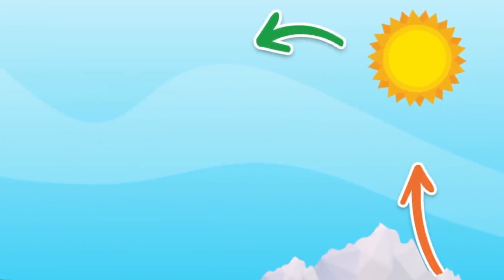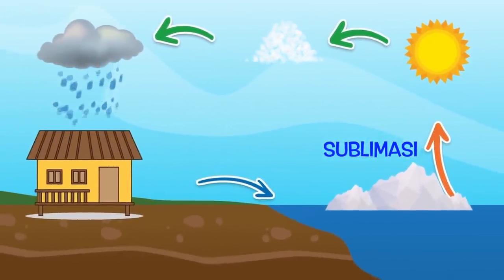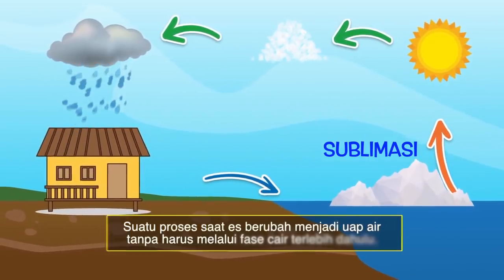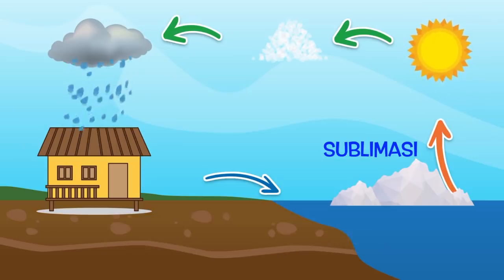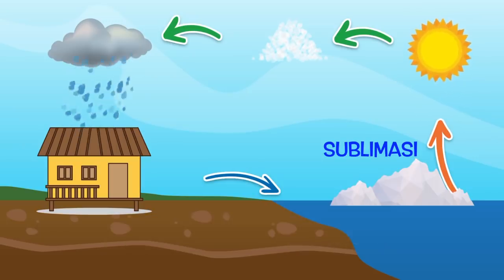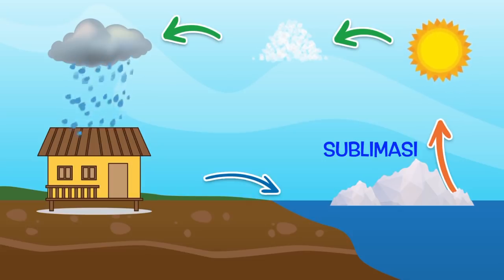Berikutnya, kita masuk pada tahapan siklus air yang ketiga, yaitu sublimasi. Sublimasi merupakan suatu proses saat es berubah menjadi uap air tanpa harus melalui fase cair terlebih dahulu. Sumber utama dari tahapan sublimasi ini adalah lapisan es dari kutub utara, kutub selatan, serta es dari pegunungan. Dalam siklus air, proses sublimasi ini lebih lambat dibandingkan dengan proses penguapan pada umumnya.